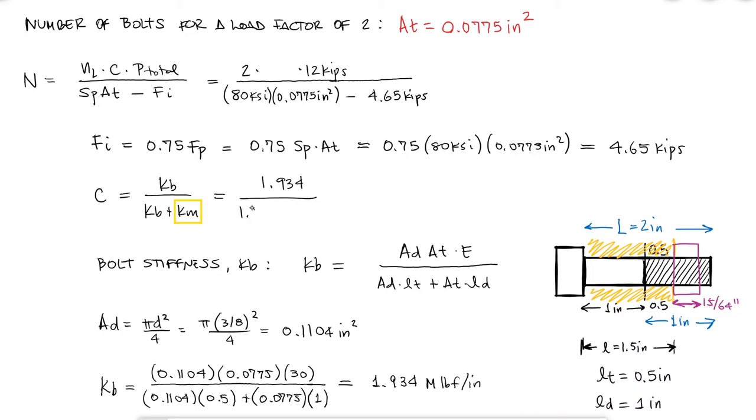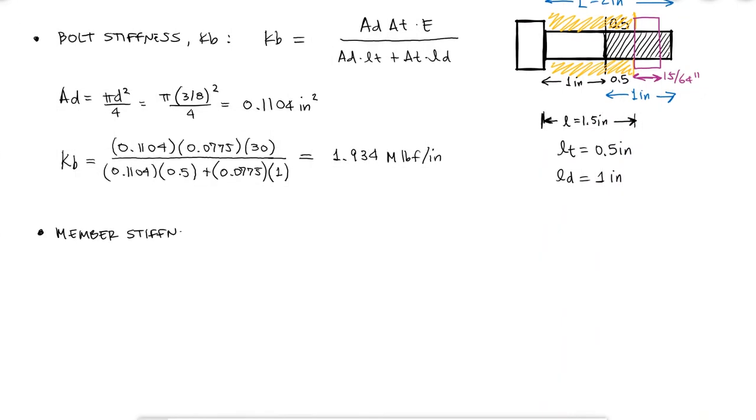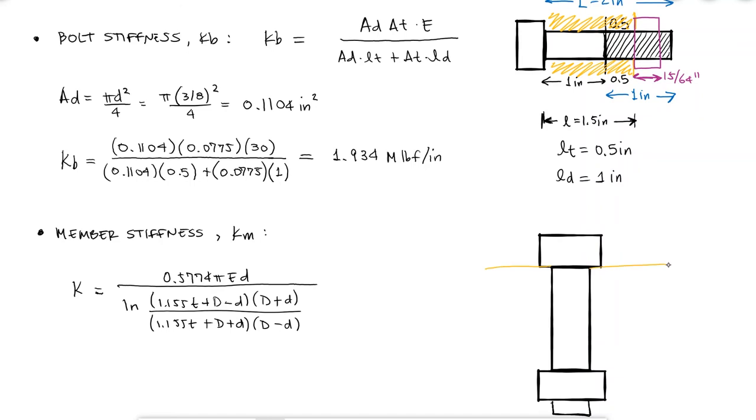Now all I need is the member stiffness. Going back to the equation we derived during that video again, we can substantially simplify it based on the information we know from the members. We know that they're both 3/4 of an inch thick, and that they're both made of cast iron, which means the elastic modulus is gonna be the same for both. Because of their thickness, the frustum would be in the middle, and K1 and K2 would be the same.